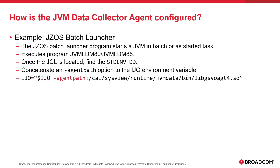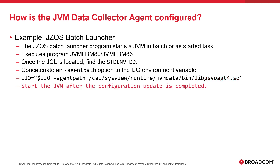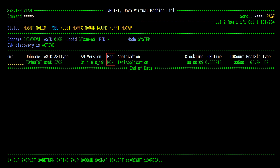The AgentPath option will need to point to the JVM Data Collector Agent runtime shared object created in install job inst6. In this case, the JVM is running in 64-bit addressing mode, so the 64-bit version of the agent is being used. After the AgentPath option has been configured into the JVM, the JVM should be started to verify the agent has been correctly configured. A value of MON in the MON column on the JVM List display indicates the JVM Data Collector Agent is correctly monitoring the JVM.